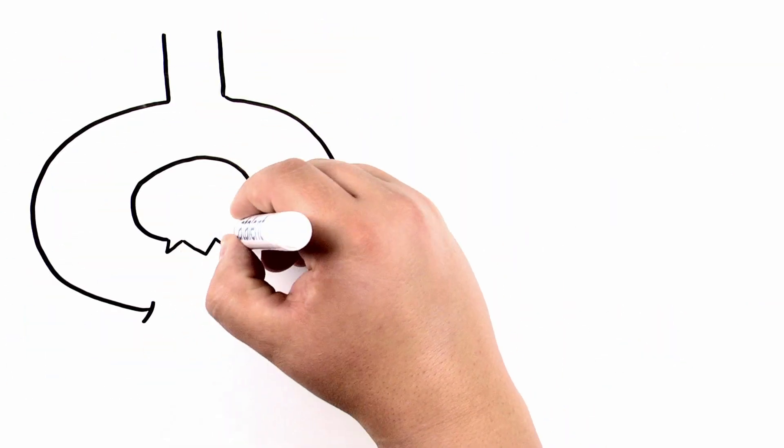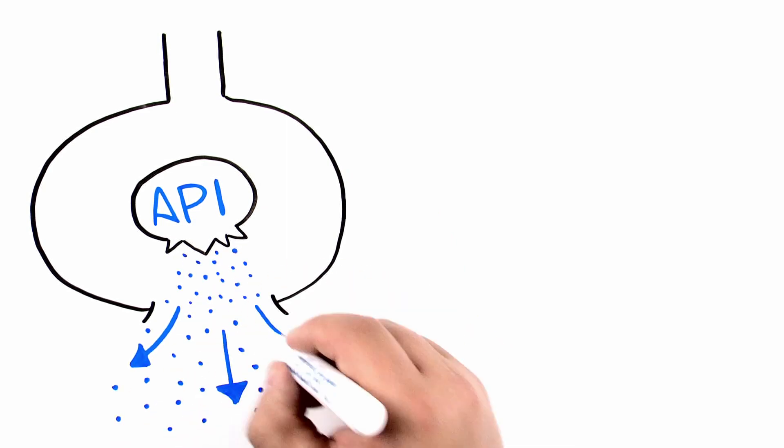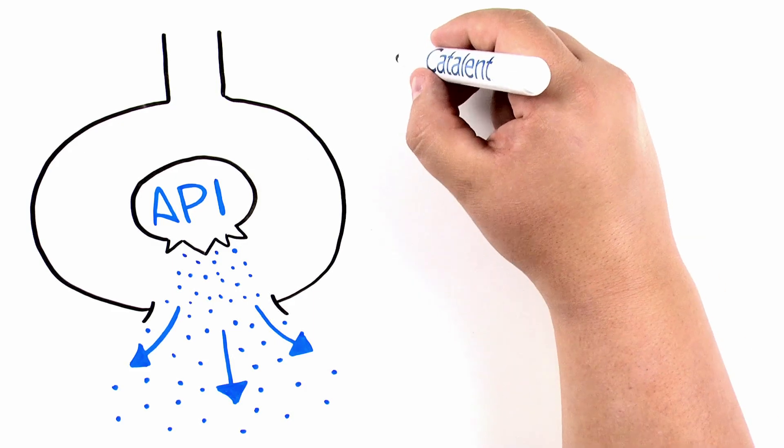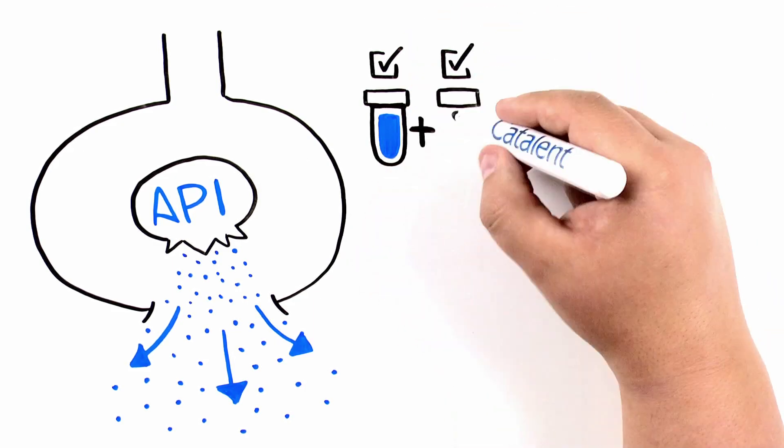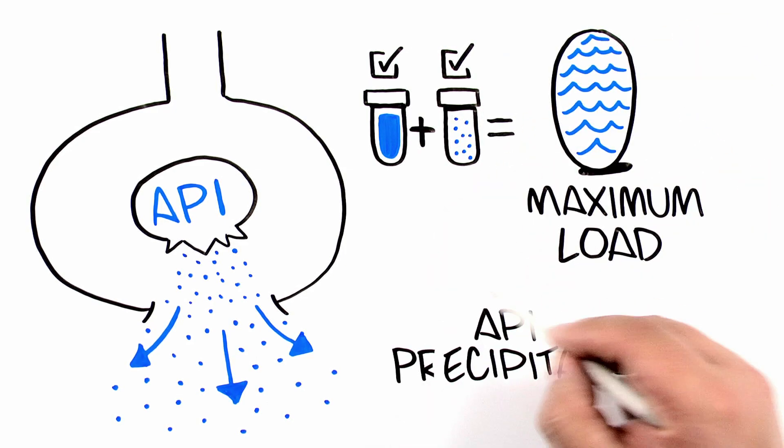After the softgel capsule is ingested, the shell ruptures and the API is dispersed as a solution in the GI tract, allowing rapid absorption into the bloodstream. It is essential to select the right combination of excipients that maximize drug load and prevent API precipitation.